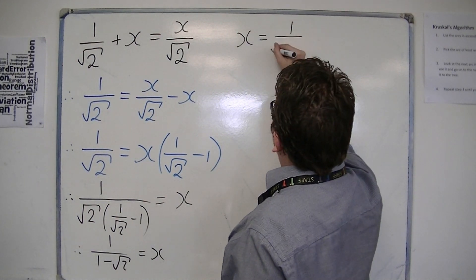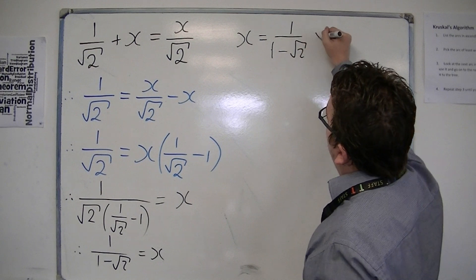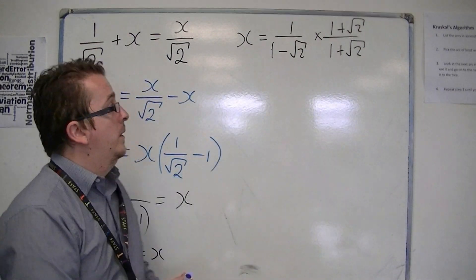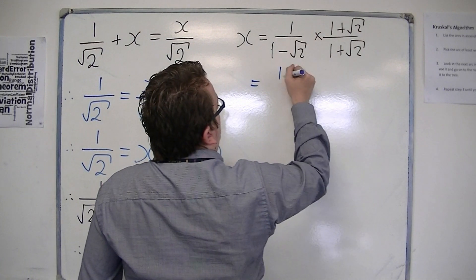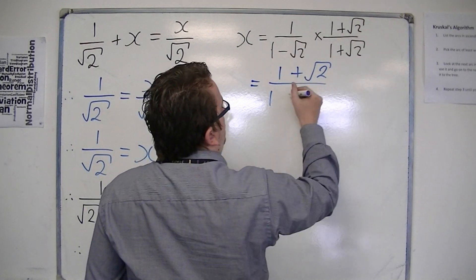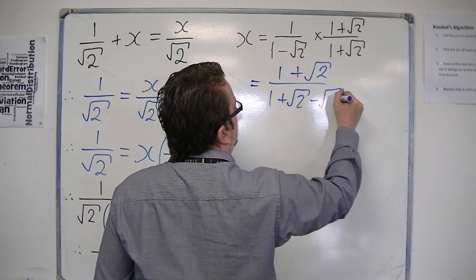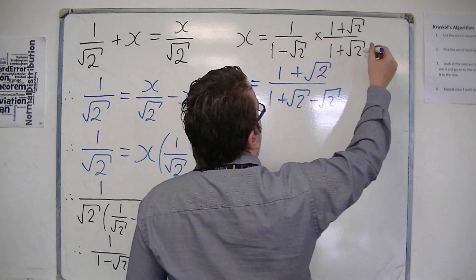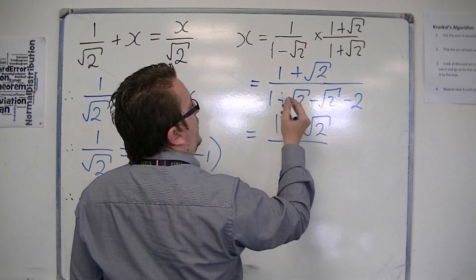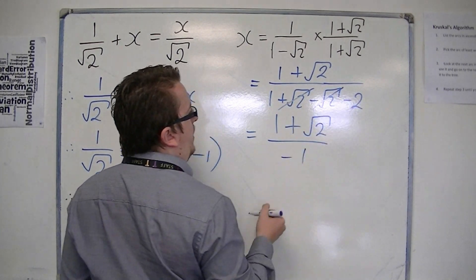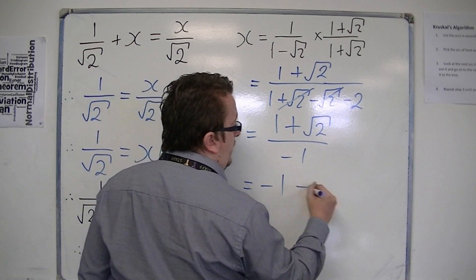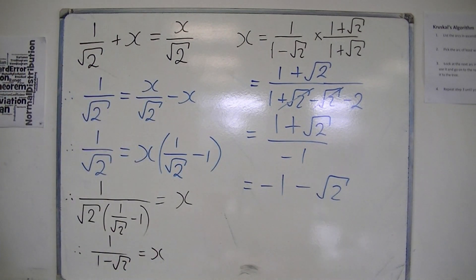So x is 1 over root 2, and I'm going to multiply that by 1 plus root 2 over 1 plus root 2. So we get 1 times 1 plus root 2 on the numerator, 1 times 1, 1 times root 2, minus root 2 times 1, and minus root 2 times root 2 is minus 2. So we get 1 plus root 2 in the numerator, and 1 take away 2 is minus 1 on the denominator. So 1 divided by minus 1 is minus 1, and root 2 divided by minus 1 is minus root 2. So we get exactly the same answer doing it that way.